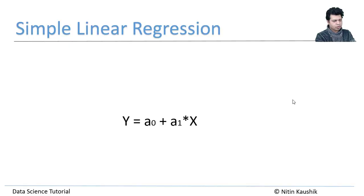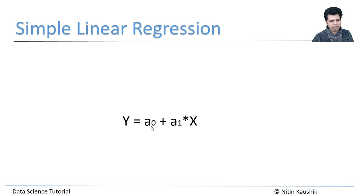In this video tutorial I'm going to explain simple linear regression as well as multiple linear regression. Simple linear regression is represented by the formula y equals a-naught plus a₁ multiplied by X, which is the formula of a slope line we studied in high school. The slope of the line is a₁ and the intercept is a-naught.